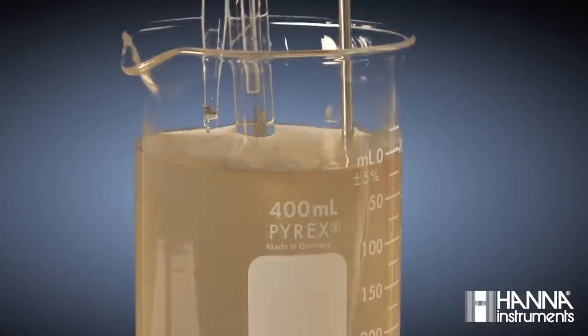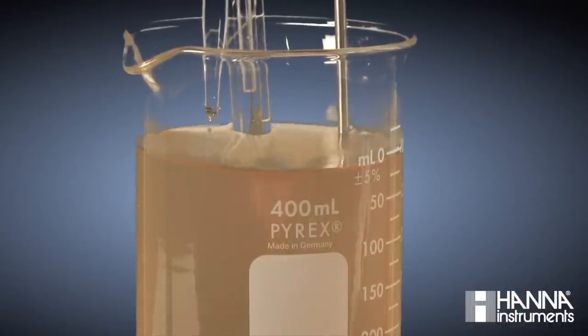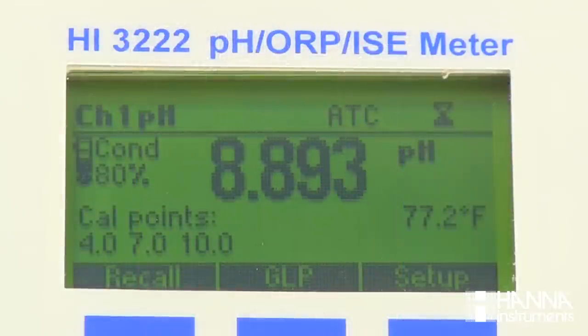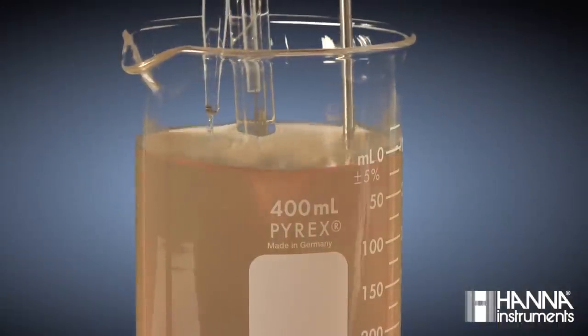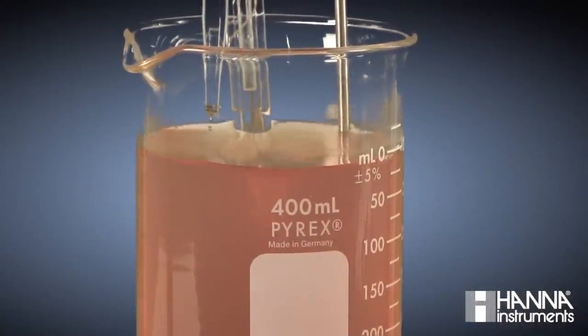I just want to show you that if we dose additional titrant and we go past our endpoint, our pH begins to change again, and our color becomes very vibrant. If a titration gets to this point, the endpoint has been overshot, and our concentration of our analyte would be overestimated.